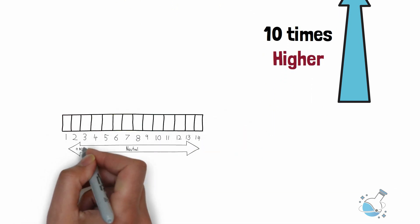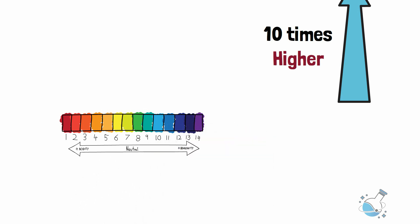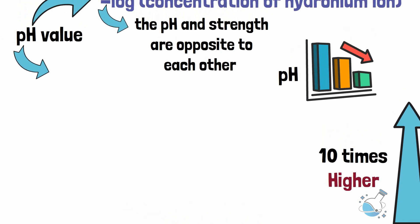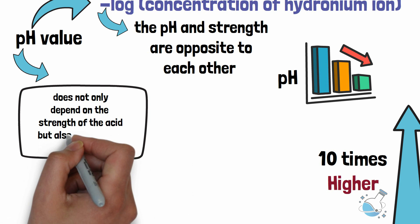The pH can have a value ranging from 0 to 14, which is called the pH scale. The pH value 7 means a neutral solution and above 7, the solution is alkaline. But the problem is, pH does not only depend on the strength of the acid, but also the amount of acid you add.